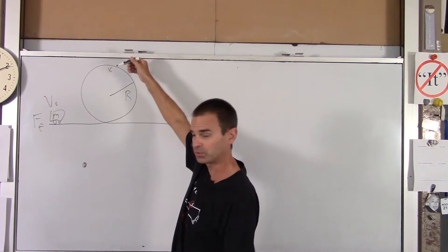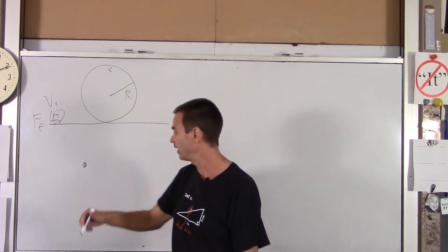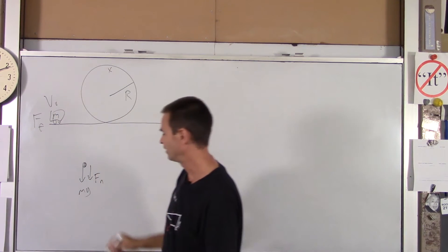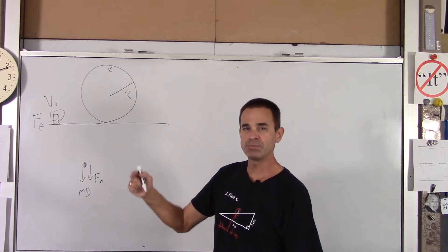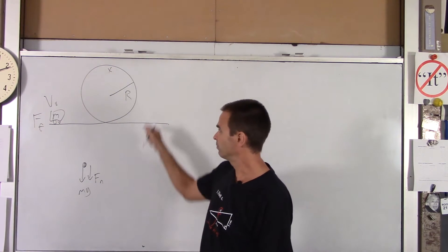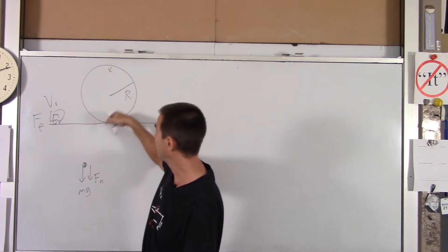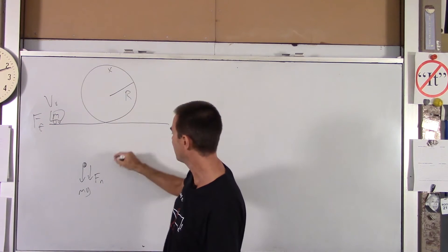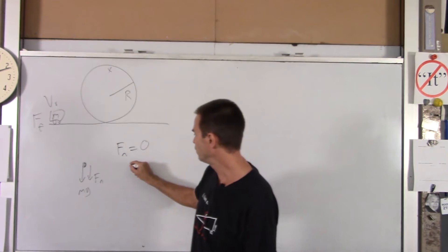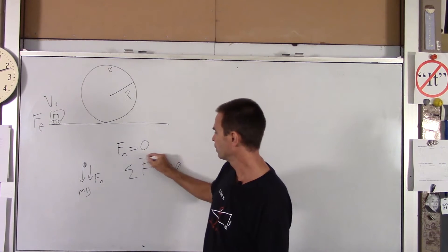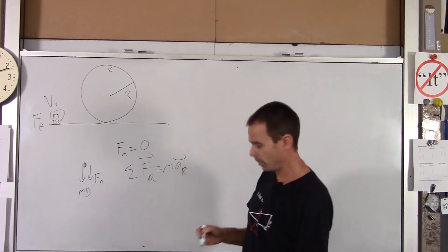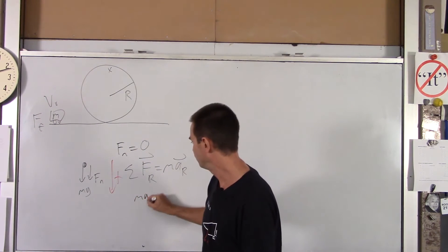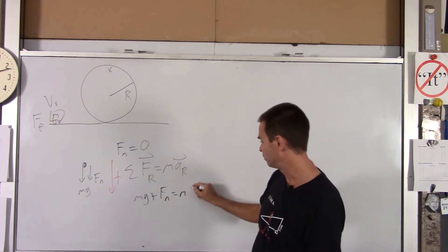What forces act on the passengers when they're at the top? They have their weight MG pulling down, and also a normal force — if it's the coaster, it's the track pushing down; if it's the passenger, it's the seat pushing down on the passenger. Either way, it's a normal force pushing down. So we've got MG and FN both acting downward, which is toward the center of the circle.